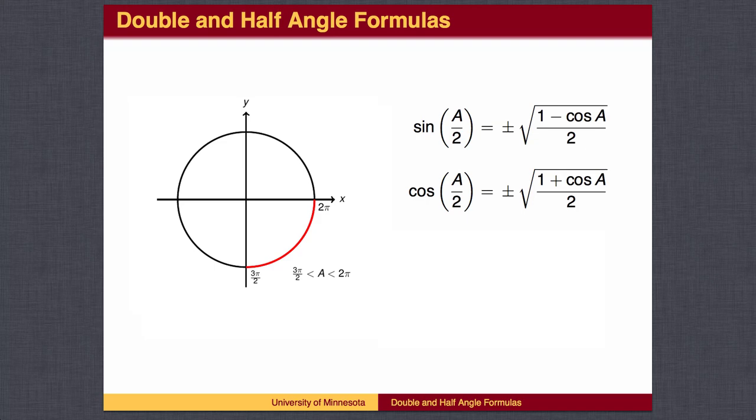For example, if the angle A is between 270 degrees and 360 degrees, then half of angle A will be between 135 and 180 degrees, and will therefore be a second quadrant angle, which will have a positive sine value but a negative cosine value.